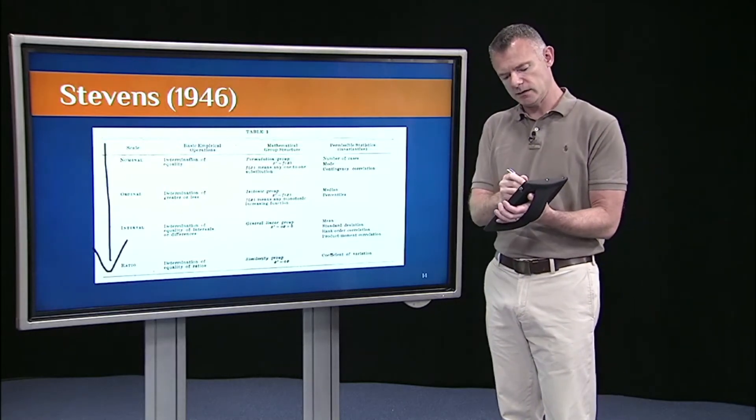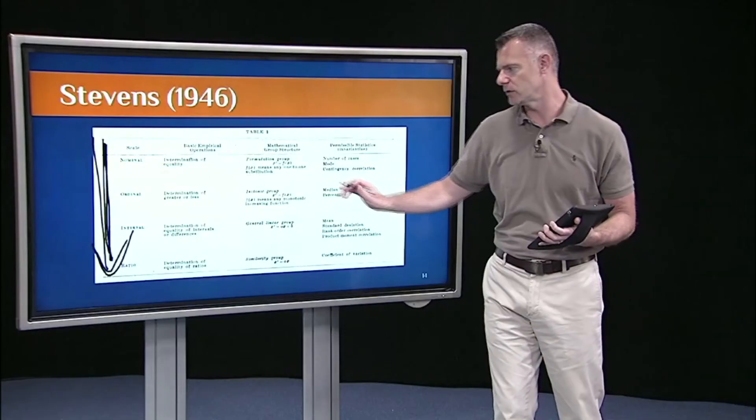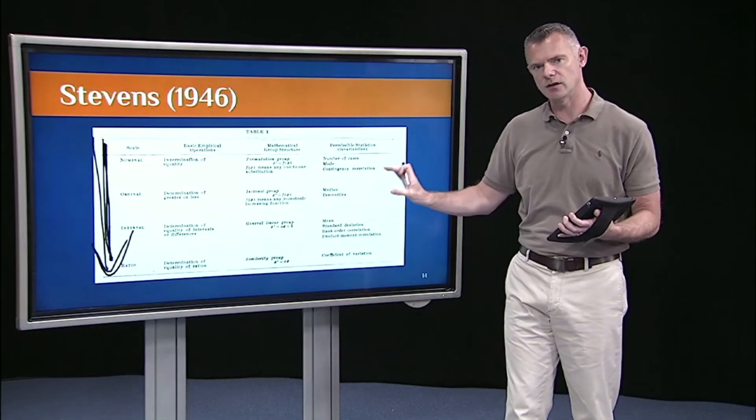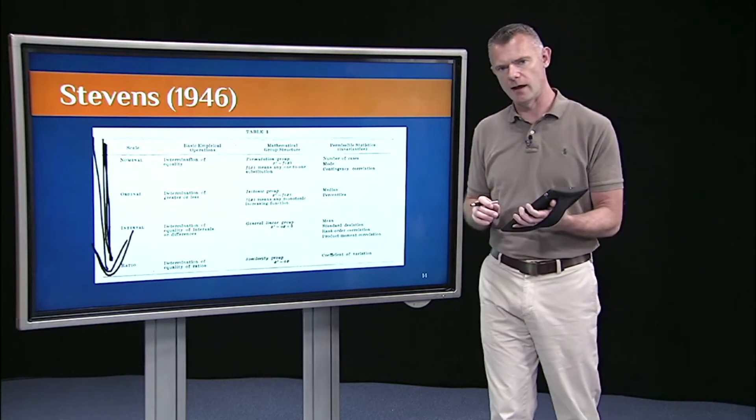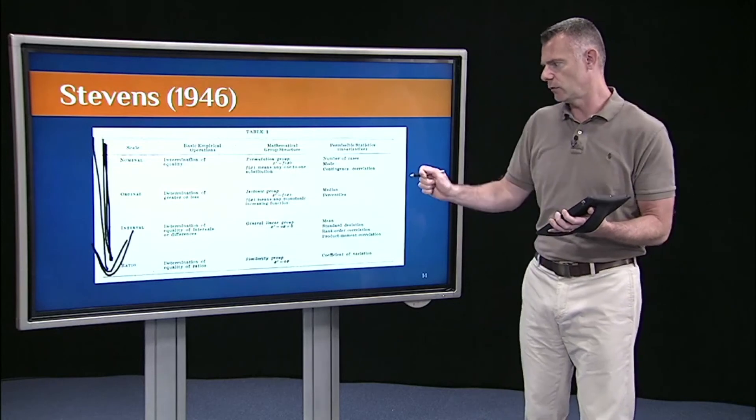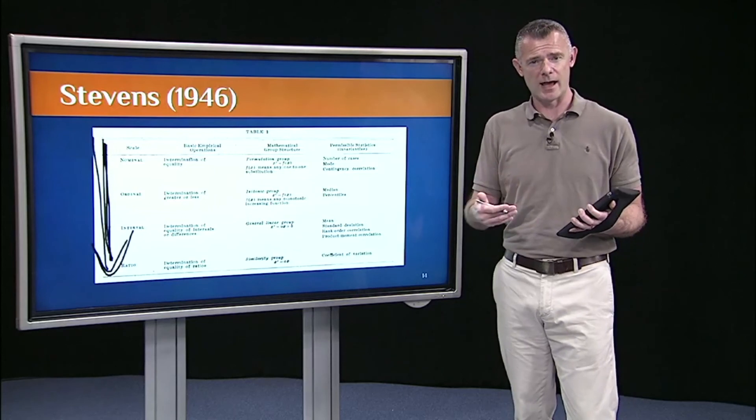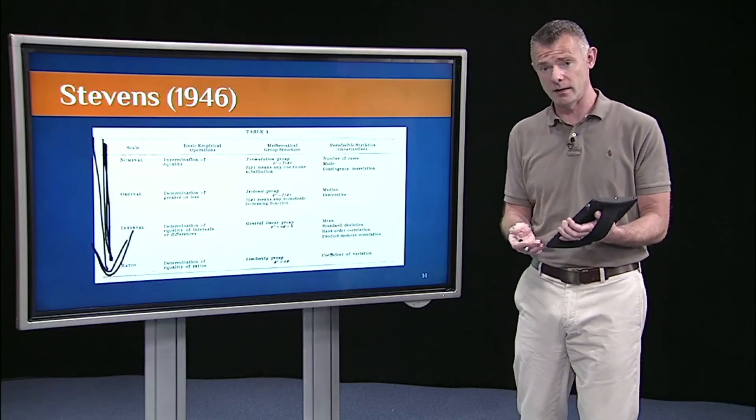As you go down this list, you're able to ask more detailed questions. In statistics and in this course, we're going to strive for variables that give us that interval or ratio scale. We can't always do that, but ideally we'll use interval or ratio variables because they're the richest in terms of information. They allow us to ask the most in-depth questions of our data.